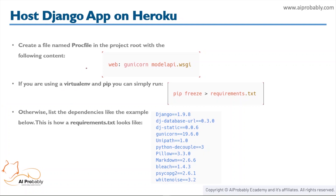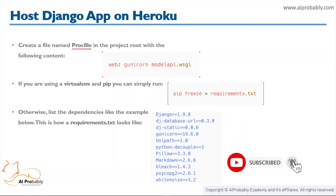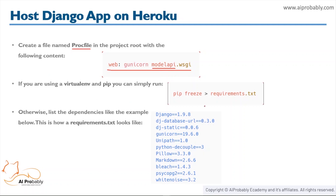After that we need to make our project ready for deployment on Heroku. To do that, we need to first create a file named Procfile without any extensions, and it will have this particular line: `web: gunicorn model_api.wsgi`. Instead of model_api, you should provide the name of your Django project.